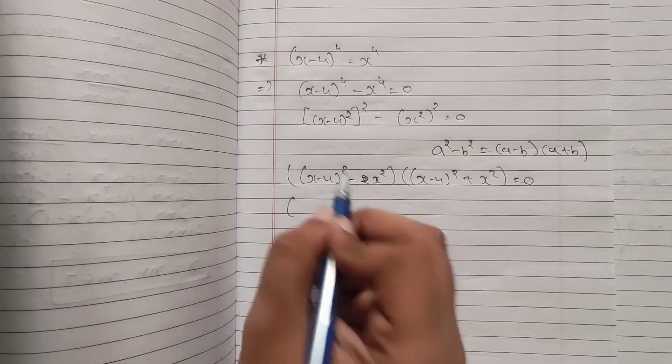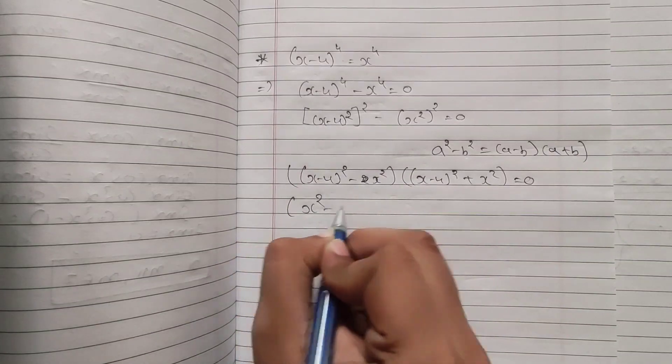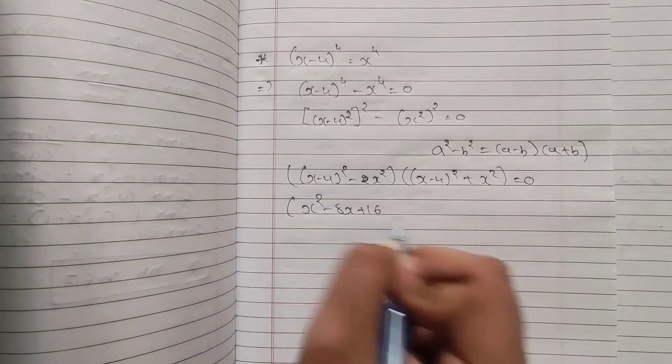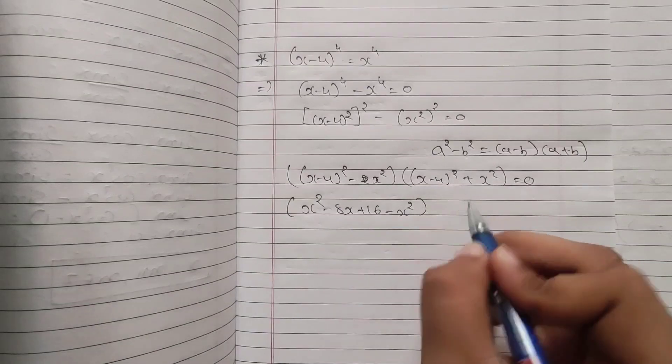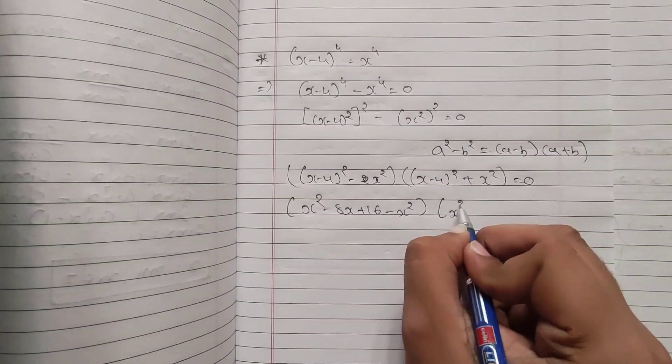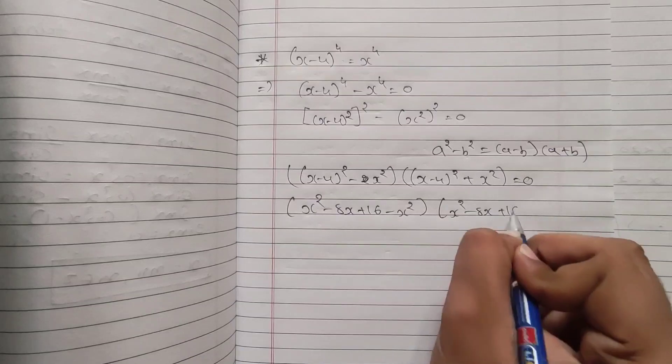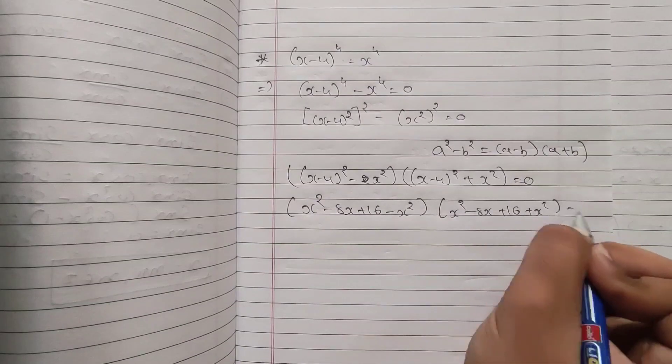Now I can write (x-4)² as x² - 8x + 16 - x². Here also I can write x² - 8x + 16 + x² = 0.